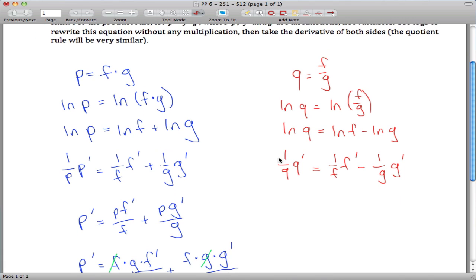Okay, now we're going to multiply both sides by Q and get Q prime is equal to Q, F prime over F minus, well, yeah, I guess this will work fine. Q, G prime over G,